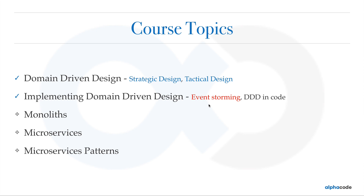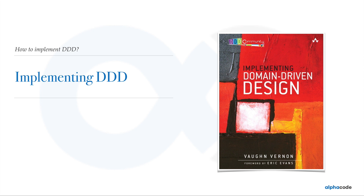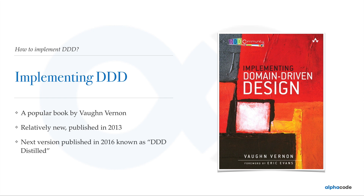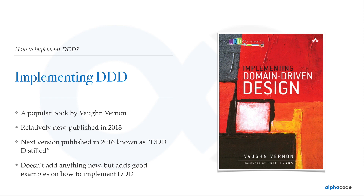Event sourcing and CQRS is something else, although not entirely different, but it is not event storming per se. Implementing Domain Driven Design is a book written by Vaughn Vernon, and it is becoming very popular in recent days. It was published in 2013. There was also a next version called DDD Distilled, also by Vaughn Vernon. It doesn't add anything extra to the DDD world but it adds good examples and shows you how you can implement domain driven design and start thinking in the DDD paradigm.